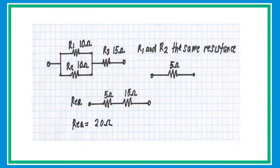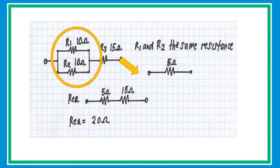Here we have another example. Let's calculate the resistance where R1 is 10 ohms, R2 is 10 ohms, and R3 is 15 ohms. You'll notice that R1 and R2 are connected in parallel with the same value, so simply take half of 10 to get an equivalent resistance of 5 ohms.